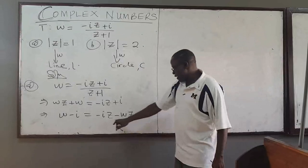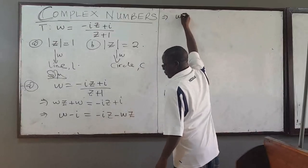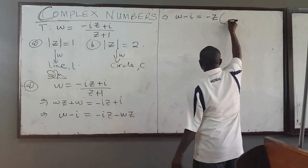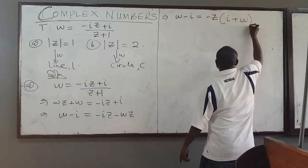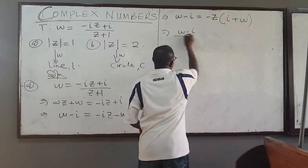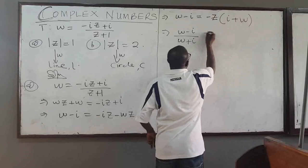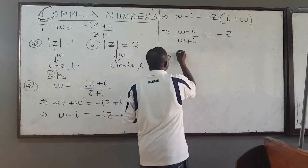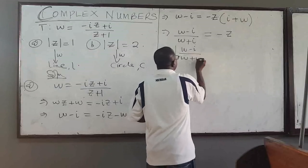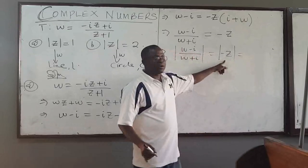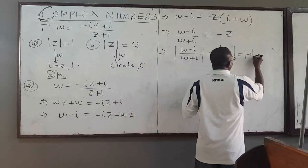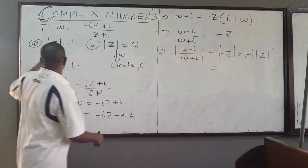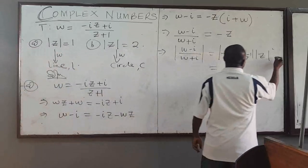Now I can factorize — I can pull out negative Z. So I have (W - i) all over (W + i) equals negative Z. Taking the absolute value of both sides, the absolute value of (W - i) over (W + i) equals the absolute value of minus Z. The absolute value of negative 1 is 1, and the absolute value of Z in part A is 1. So 1 times 1 equals 1 — all of this equals 1.